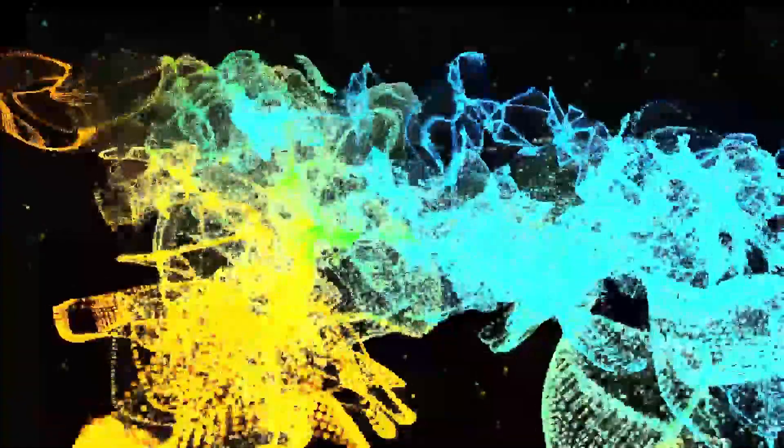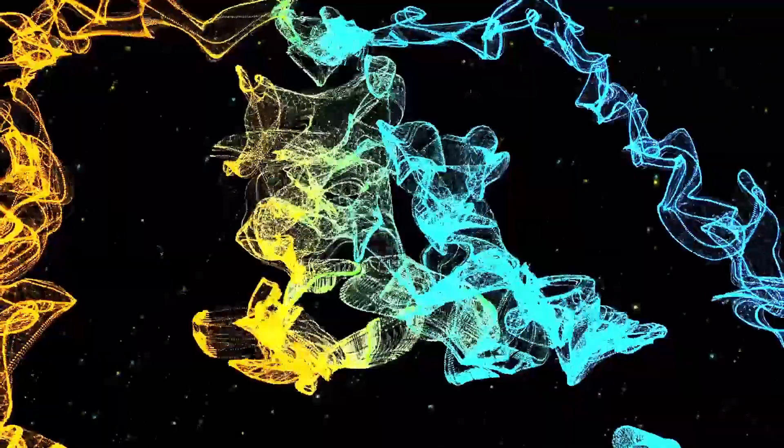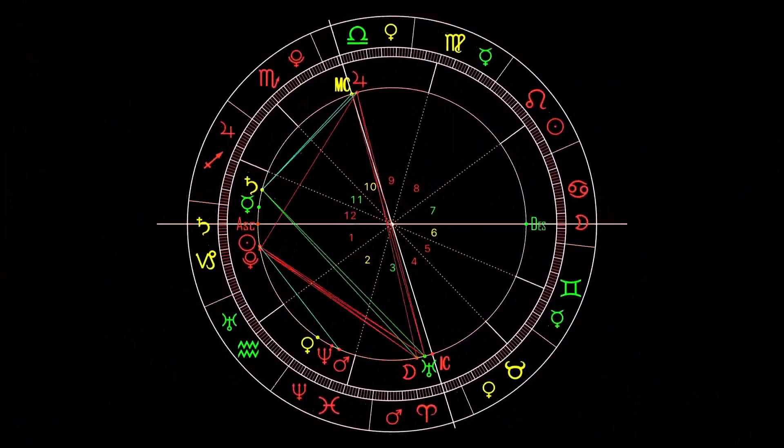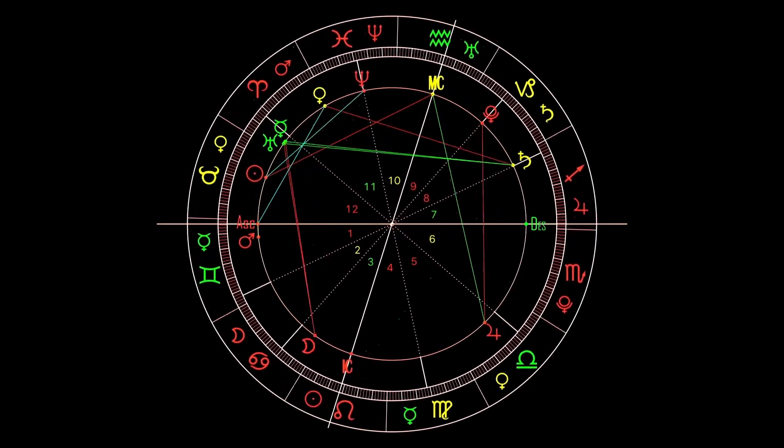Even stranger, the emission wasn't constant. It pulsed rhythmically every few seconds like a heartbeat echoing through space. Some scientists suggested exotic radiation or metallic fluorescence. Others whispered about technology, an artificial process controlling light at an atomic level. Whatever the cause, one fact became impossible to ignore: 3i Atlas was glowing in a way no natural object ever had.